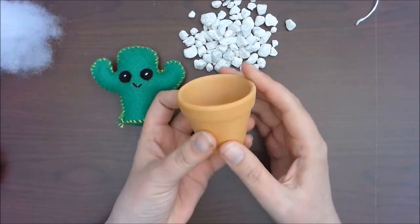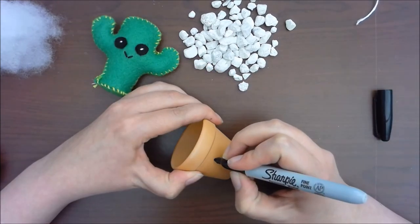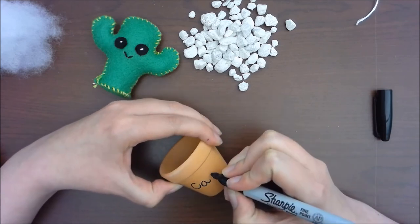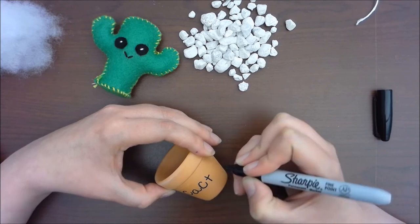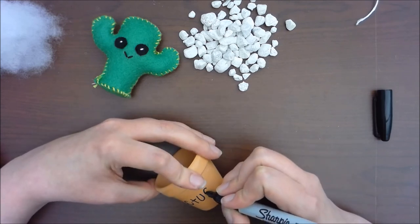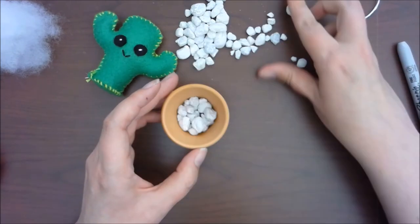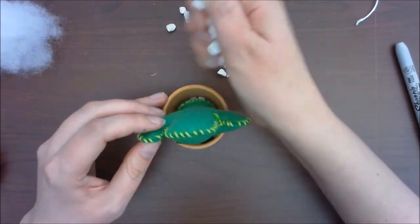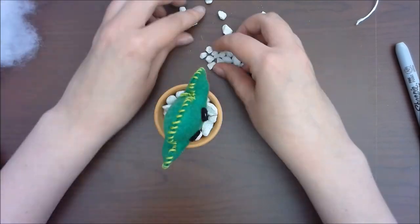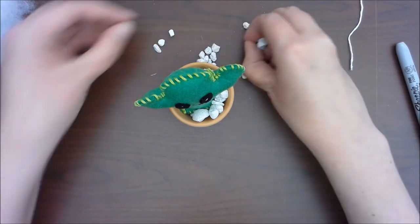But for now, what we're going to do is we're going to take our terracotta pot and you can decorate it with a Sharpie marker, you could paint it, you could do whatever you like. I'm just going to write the word cactus, because why not, it's supposed to be cactus. And then we're going to take our stones and fill our terracotta pot up halfway, add our little cactus in, fill stones around as you like until you get them positioned just so, and that's it.